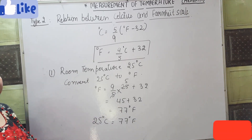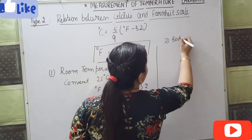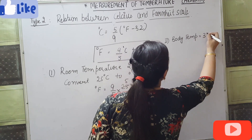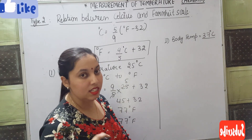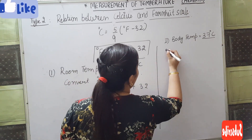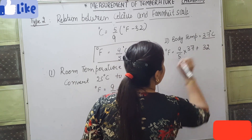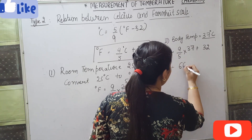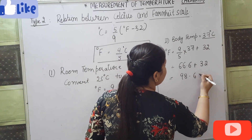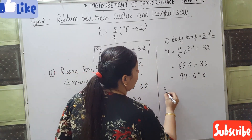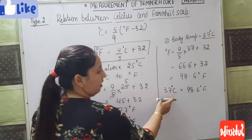The body temperature is 37 degree Celsius. In Fahrenheit scale it is 98.6. Let's verify: degree Fahrenheit equals 9 by 5 into 37 plus 32. Solving, that is 66.6 plus 32, which equals 98.6 degree Fahrenheit. So body temperature in Fahrenheit scale is 98.6°F and in Celsius scale it is 37 degree Celsius.